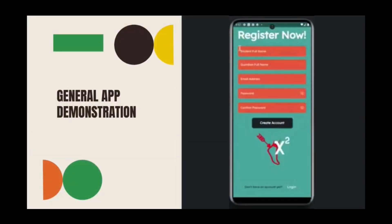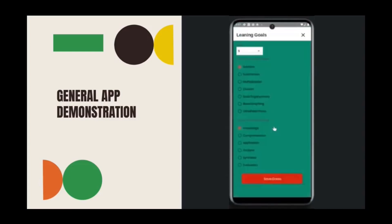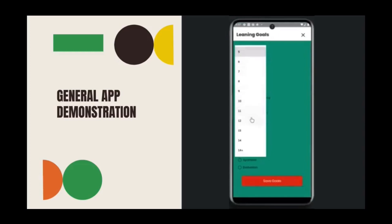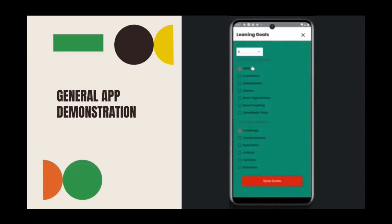Upon signing up for Achilles Math, a few questions are asked regarding what topic the student would like to learn about, as well as the proficiency level they would like to achieve in these topics. Based on these topics, numerous lessons of varying difficulty are given to each student to learn each respective topic.